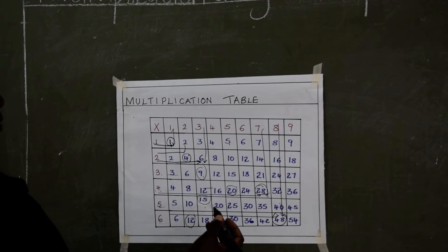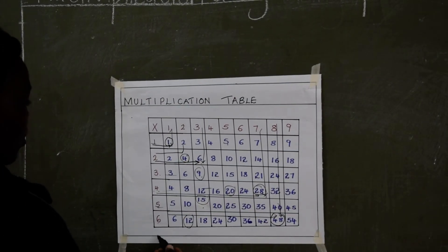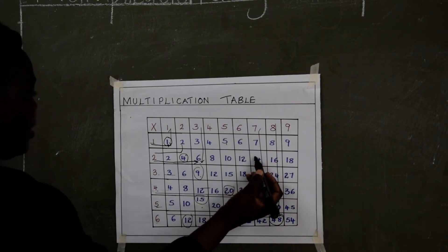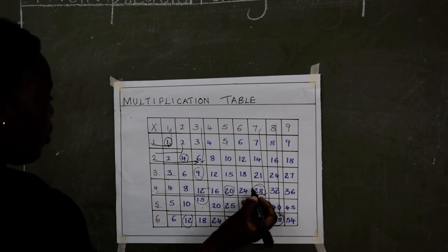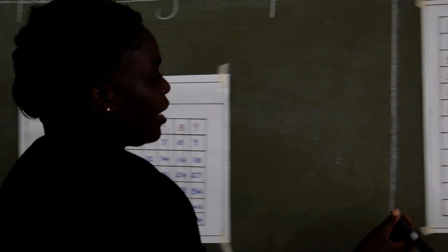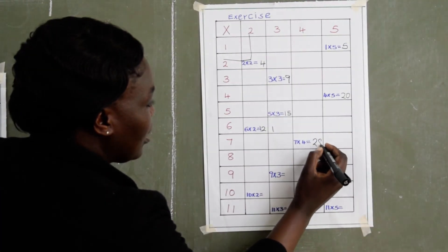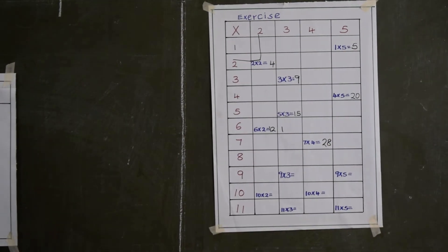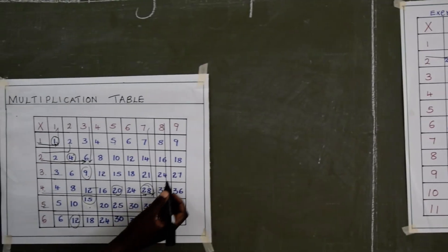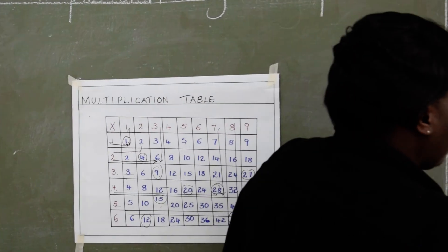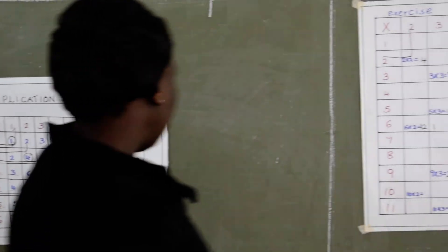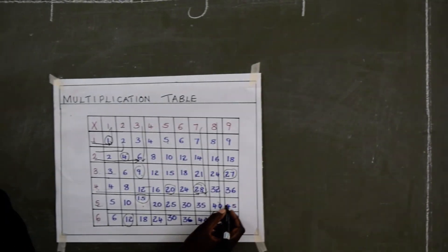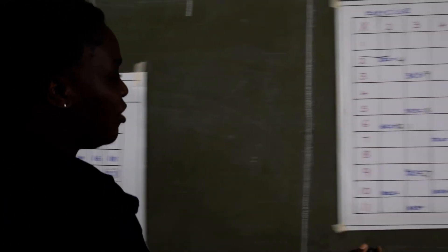7 times 4. I will go to 7. Unfortunately, we don't have 7 here. But 7 is here. So we can see. 4 times 7 is 28. Then 9 times 3, here is 27. 9 times 5, here 45.